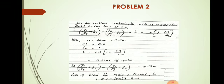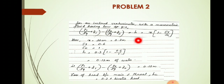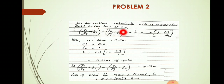For an inclined venturimeter, the manometric fluid has a low specific gravity. We have to find the inclined venturimeter equation. Water has specific gravity of 1 and the manometer liquid has specific gravity of 0.6.